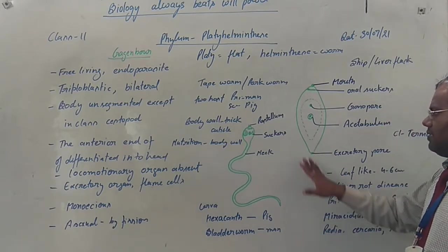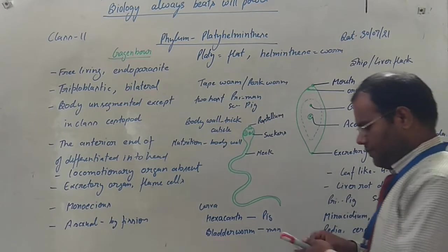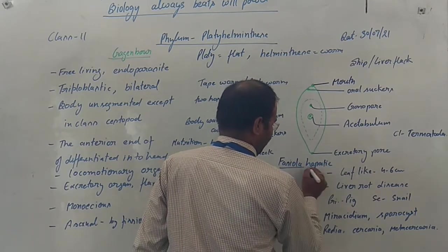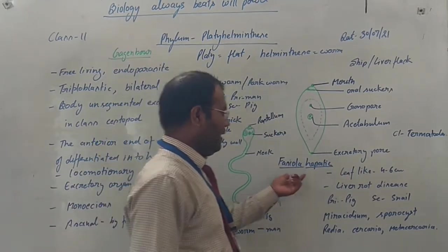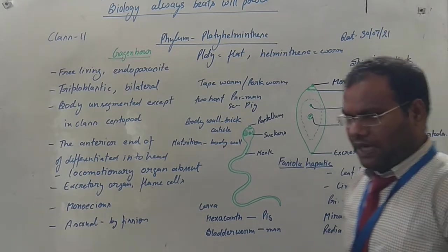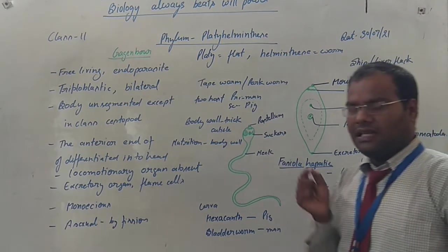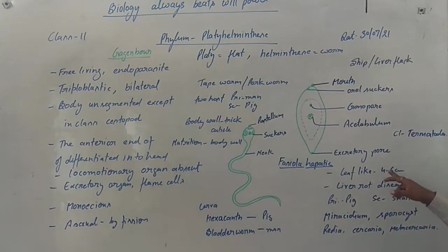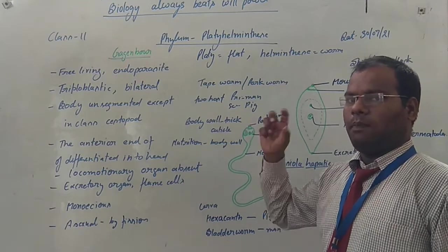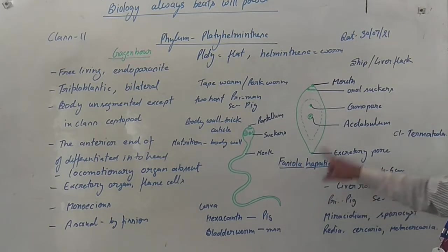We draw here Fasciola hepatica and Taenia solium. Fasciola hepatica is present in the liver of the sheep. It is a leaf-like structure. Fasciola hepatica is found in the liver of the sheep and is a leaf-like, flat, oval-shaped structure about 4 to 6 cm in size.